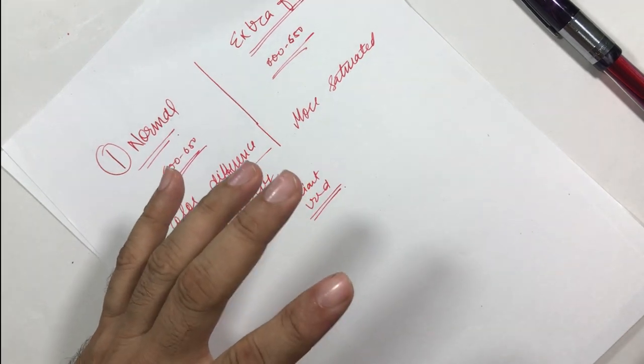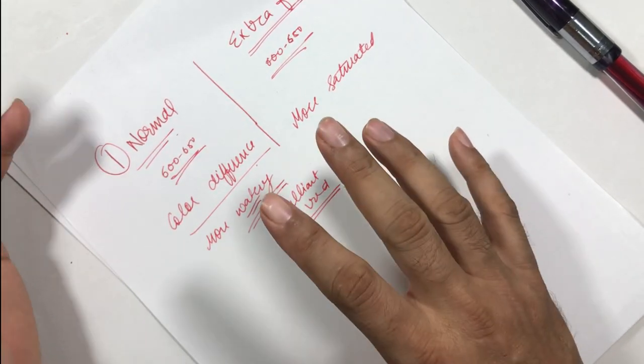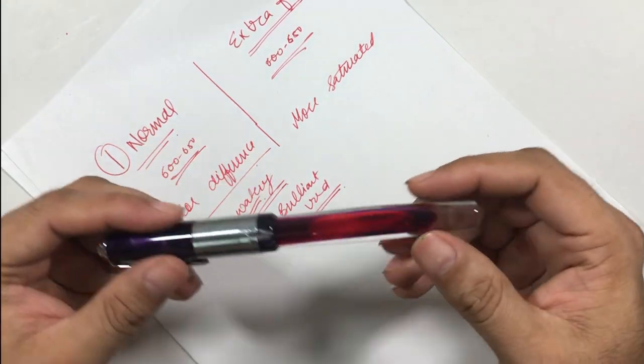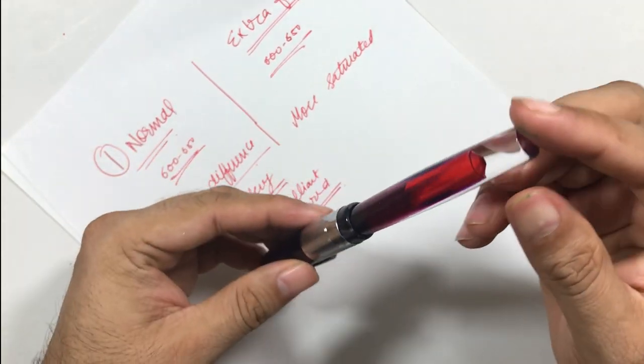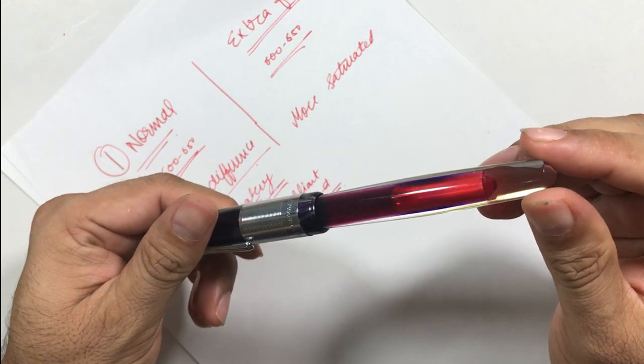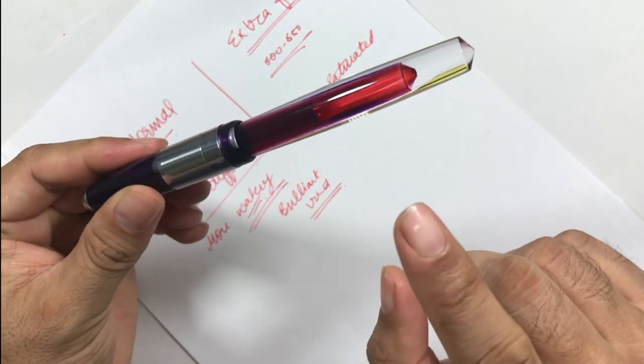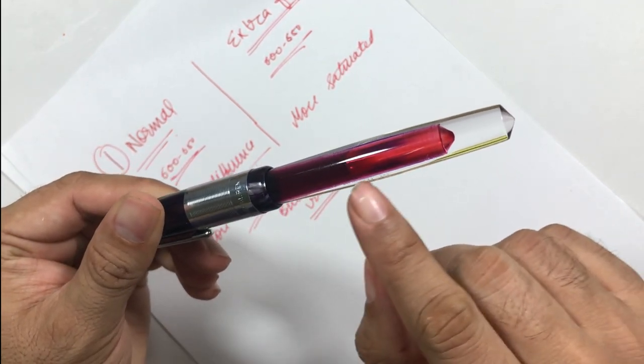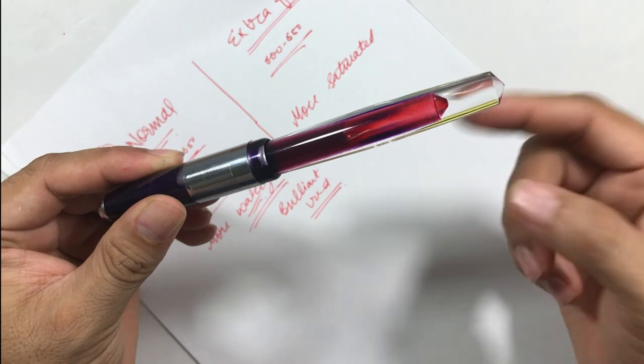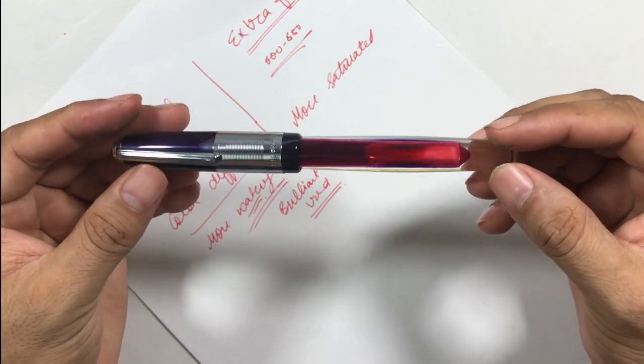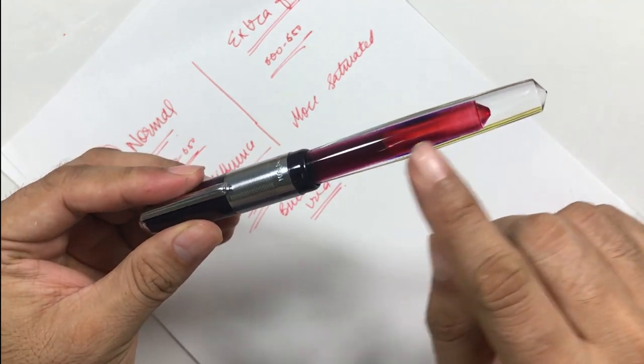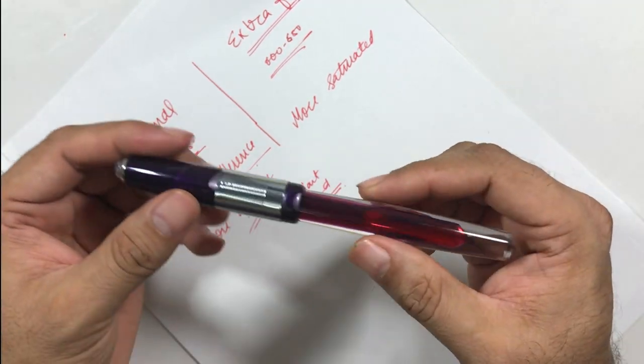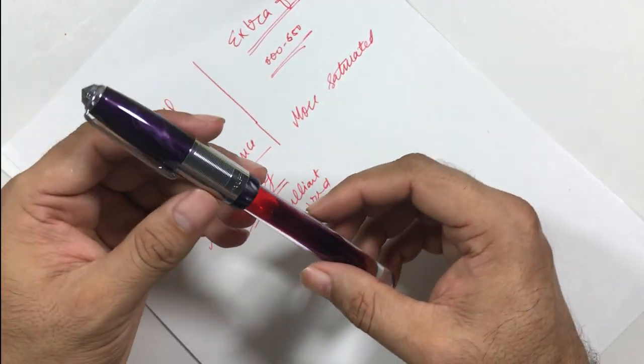But there is one problem with Dayton inks that's consistent in both normal inks as well as extra fine. Dayton inks do stain the fountain pens. You can see here this is a clear barrel, but the barrel is almost now turned red. Earlier I had sapphire blue ink into this pen, so you can see a small blue tinge also. Because I washed this pen and refilled it with red ink, but the blue has stained.